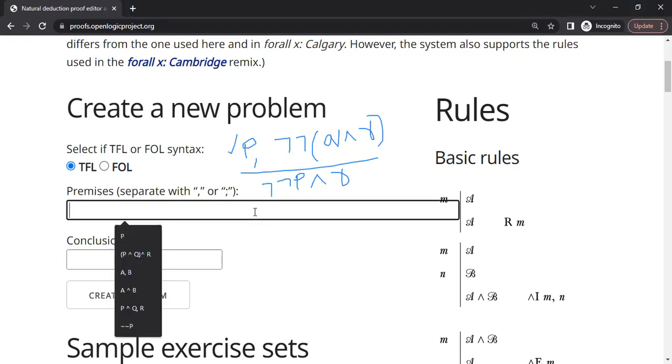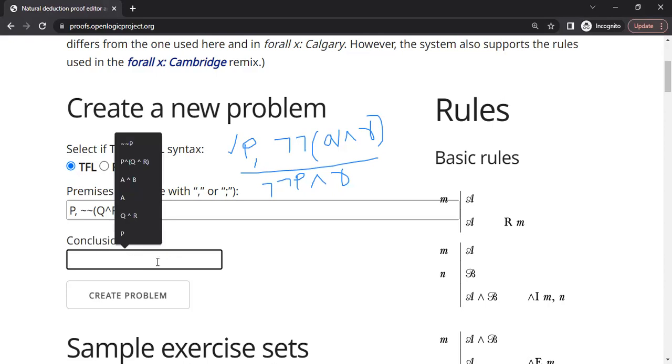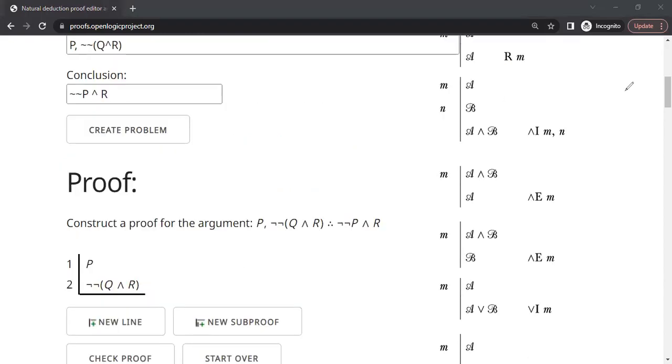So first, we need to create a problem. The problem is P, comma. So in this tool, we can use not in multiple ways. We can use this tilde symbol that is not. So I am going to use tilde symbol. It will automatically change for us Q and R. It only allows uppercase letters for the variables. That's the reason I have to do like this. All right. So conclusion is not not P and R. So that's the conclusion. So we have created a problem.